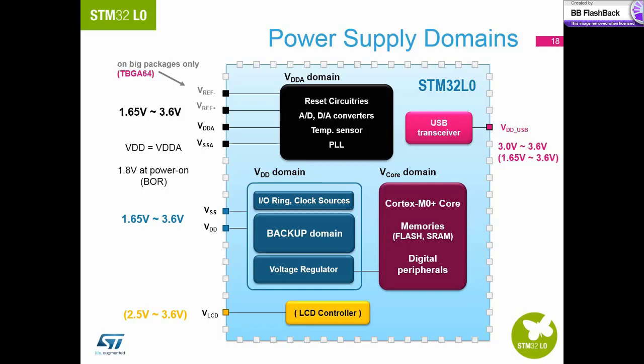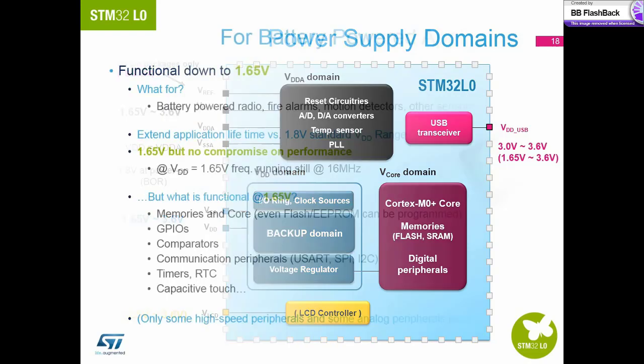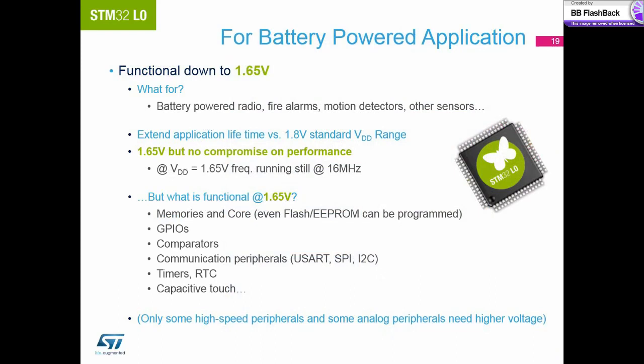If USB is not used, then VUSB can be connected to VDD. For battery-powered applications, the STM32L0 can run down to 1.65 volts, extending the battery life of the product. Not all peripherals are available down to 1.65 volts, primarily the ADC, but most are. You even have the ability to reprogram the flash or EEPROM at this voltage.